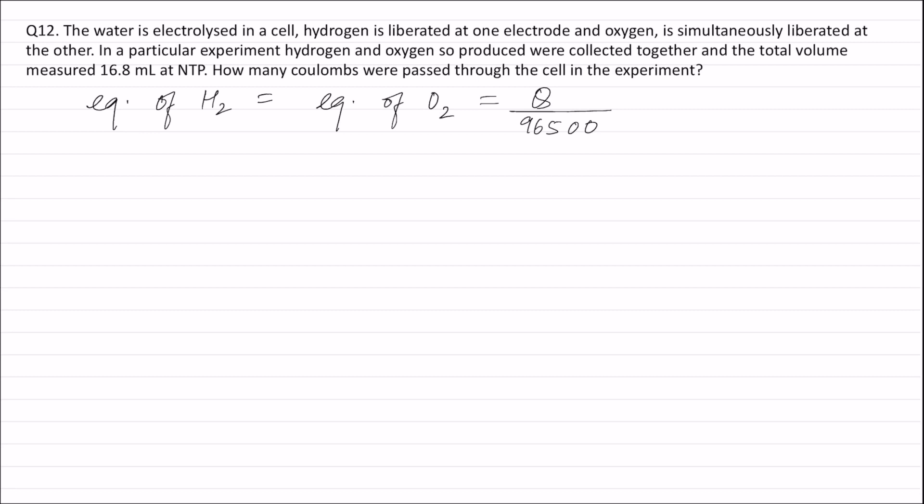Equivalence of hydrogen is equal to volume of hydrogen, let it be VH2, divided by equivalent volume of hydrogen, that is 11.2 liters, and this is equal to Q divided by 96,500 coulombs. From this, volume of hydrogen will be equal to Q into 11.2 divided by 96,500 liters.